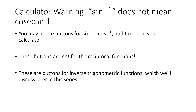One important note about the calculator: you might notice buttons labeled sine to the minus 1, cosine to the minus 1, and tangent to the minus 1. You might think that, since x to the minus 1 means 1 over x, these give reciprocals. Unfortunately, that is not the case — sine to the negative 1 does not mean 1 over sine, and it does not mean cosecant. Those buttons are for inverse trigonometric functions, which we'll discuss later in this series. Don't look at those negative 1 buttons and think they'll give you a reciprocal, because they won't.